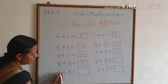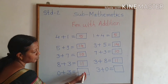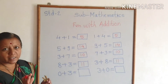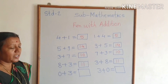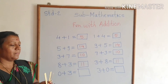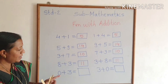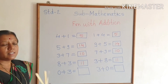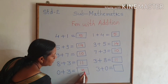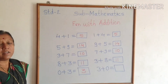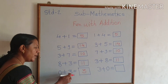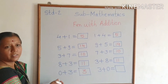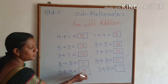Now look below. 0 plus 3 equals how many? Zero means nothing. So how many do we need to add? 3. Add 3 here. Zero means nothing, so count: 1, 2, 3. So 0 plus 3 is equal to 3. When we add zero with any number, the addition is that number itself. If 0 plus 5 is given, the answer is 5. If 0 plus 9 — the answer is 9. Here: 0 plus 3 is equal to 3.